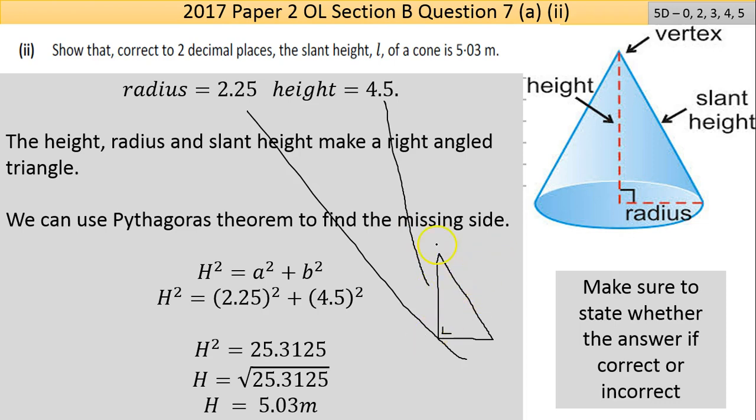Hypotenuse squared equals the sum of the squares of the other two sides. So H² = 2.25² + 4.5². Put it in your calculator, you get H² = 25.3125, so H = √25.3125 = 5.03 meters. Job done.